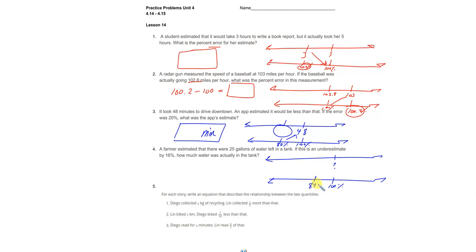So 16 percent less would be at 84 percent, because 100 take away 16 is 84. This is the 16 percent underestimate that we're going with, and that underestimate that he guessed was 25. So our job is to find the question mark.